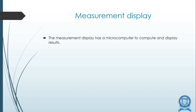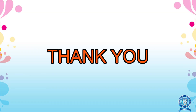The fourth component is the measurement display, which has a microcomputer to compute and display results. Signals from the reference receiver and the measurement receiver located in the laser head are counted in two separate pulse counters and subtracted. Necessary calculations are made and the computed value is displayed, including correction inputs for temperature coefficient, expansion, air velocity, and similar factors. With this topic, we are concluding this session. Thank you.